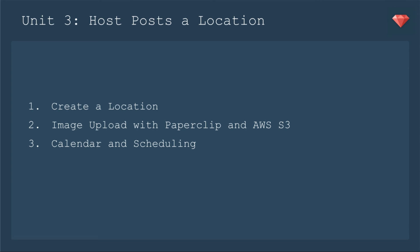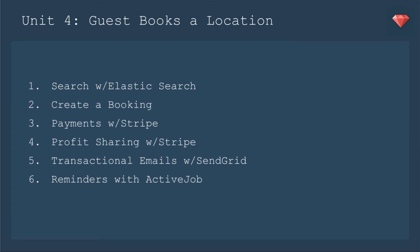We'll work on calendar and scheduling for when these rooms are going to be available. In unit four, we'll work on the guest side — the guest books a location. So we'll have search with Elasticsearch, we'll create that booking, implement payments with Stripe and then profit sharing with Stripe, and then transactional emails with SendGrid to let everybody know that the room was booked. And then we'll set up reminders about that booking with ActiveJob.